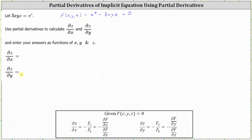The partial of z with respect to x is equal to the opposite of the partial of F with respect to x divided by the partial of F with respect to z. The numerator is the partial of F with respect to x, which is the derivative of e to the z minus 3xyz with respect to x, treating both y and z as constants. The derivative of e to the z with respect to x is zero, and the derivative of negative 3xyz with respect to x is negative 3yz, because the derivative of x with respect to x is one.